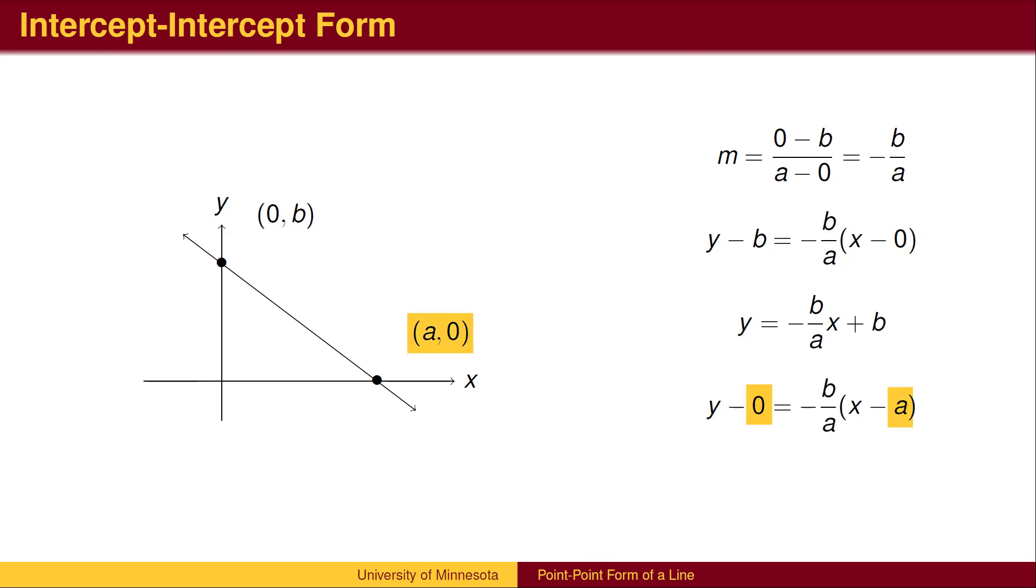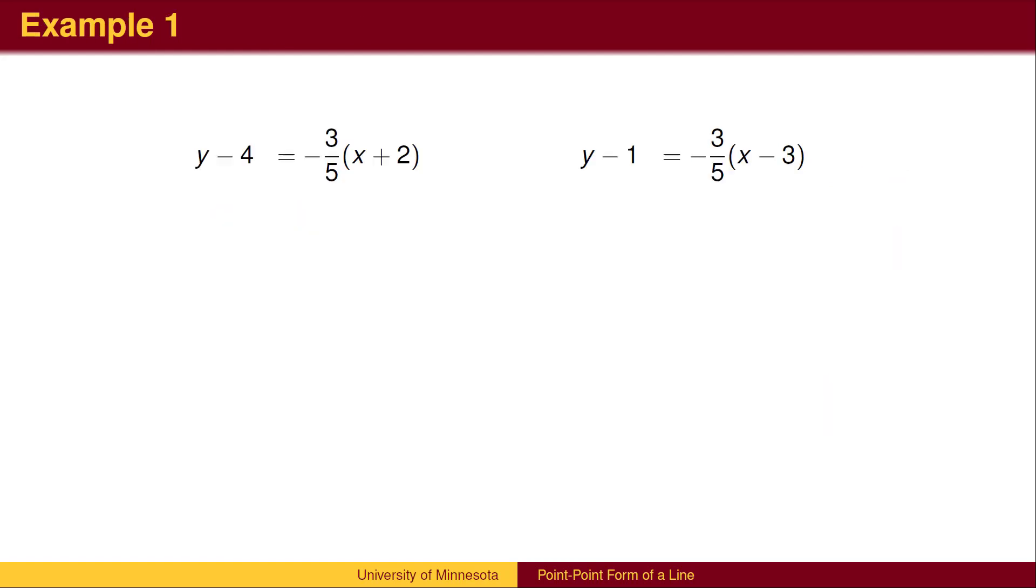You may wish to verify that this is the same equation that you get when you use the x-intercept instead. Here is the original example once again, with the point-slope form using both points. You may wish to pause the video and simplify each equation to slope-intercept form.